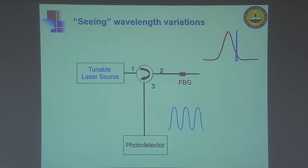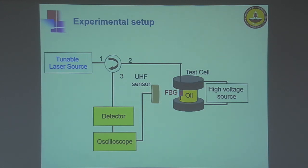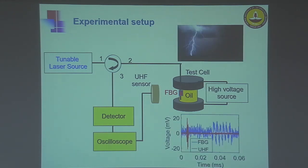We went ahead and tested this technique at the laboratory level to detect partial discharges. I have the experimental setup here, where I use an oil-filled miniaturized test cell which has the facility to generate a discharge when excited by an appropriate high-voltage source, and I paste my fiber Bragg grating sensor on the inner surface of the test cell wall. The grating is interrogated with the help of a tunable laser, and in addition, we use an ultra-high frequency sensor to capture the electromagnetic pulse emitted by the discharge, which serves as a reference measurement. A typical time-domain trace captured in this experiment shows the signal in red captured by the UHF sensor and the signal in blue as the acoustic wave captured by the FBG sensor.